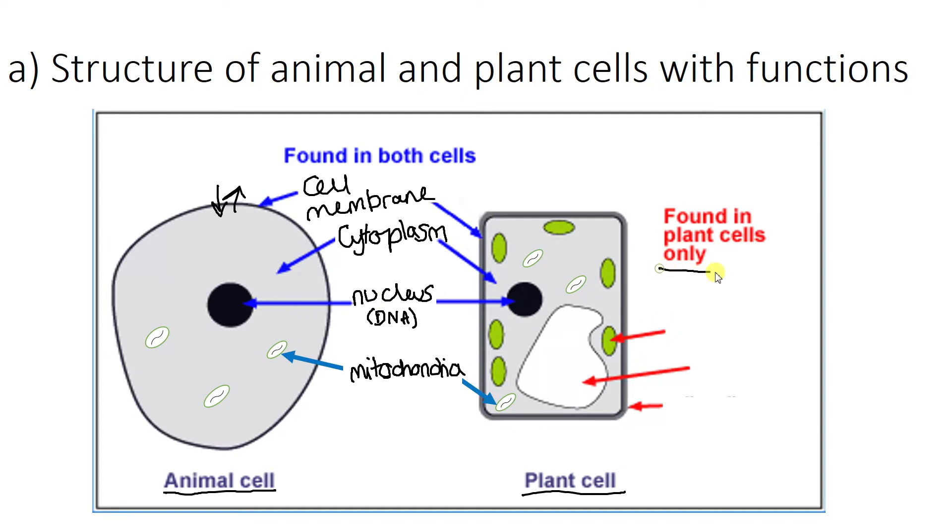Okay, so moving on to things that are only found in plant cells. One of the first things are these green blobs. We call these chloroplasts. Chloroplasts are the site of photosynthesis. Later on in biology, you go over photosynthesis in detail, but this is where that happens, in this green bit. And actually the bit that makes it green is something called chlorophyll. But again, we'll come back to that.